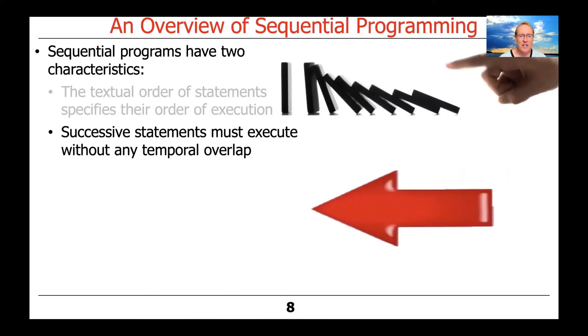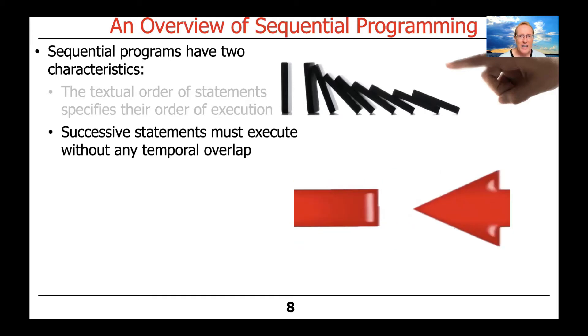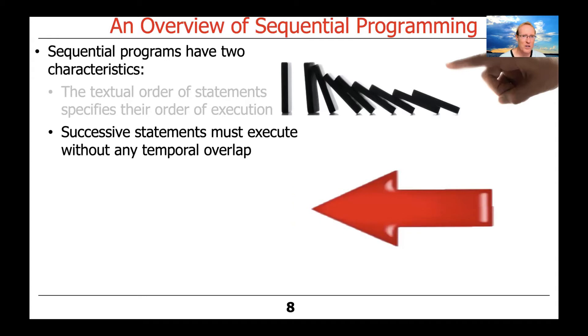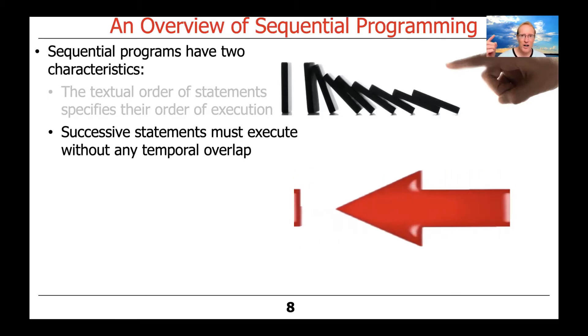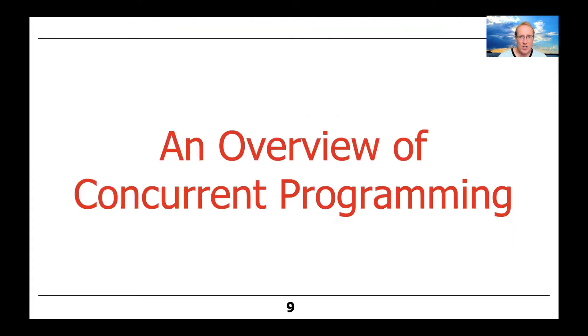Another characteristic is that successive statements must execute without any temporal overlap. They all go one at a time and one statement doesn't go before the other one. Now, keep in mind that this is the semantics of a sequential program. The actual execution of the code, once it's been converted by a compiler into assembly language and machine code, and then the machine code is run on a processor core, deep down in the bowels of the hardware, instructions can be reordered if it doesn't change the semantics of the output. But the logical behavior of the program is guaranteed to be sequential and deterministic, and you won't have overlapping execution. Everything goes one at a time. Think of it like dominoes - you push one and they all kind of fall down in a sequence.